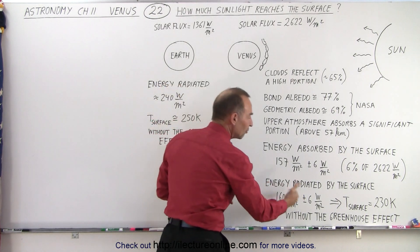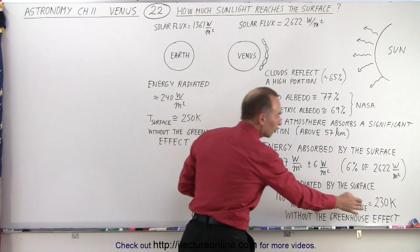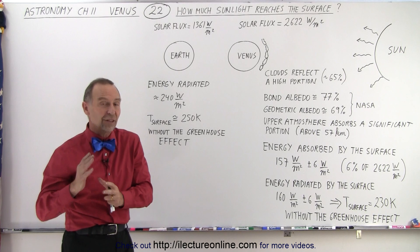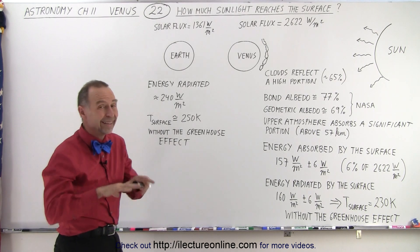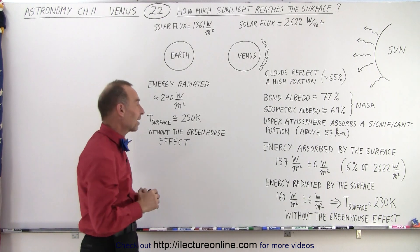But if all this radiation was to freely go back into space, it would then correspond to a surface temperature of about 230 Kelvin, which is almost 45 Celsius degrees below zero. That's what the temperature on the surface of Venus would be like if there wasn't a greenhouse effect.